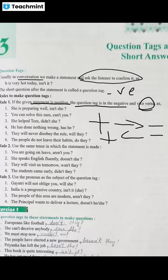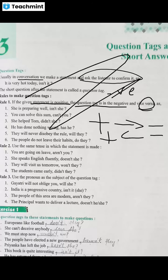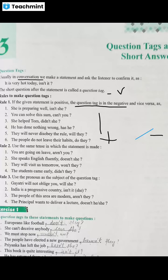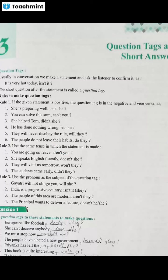So, the first example: she is preparing well. Isn't she? So, if the statement is positive — 'you are preparing well' — then the tag becomes negative: 'are you not preparing well?'